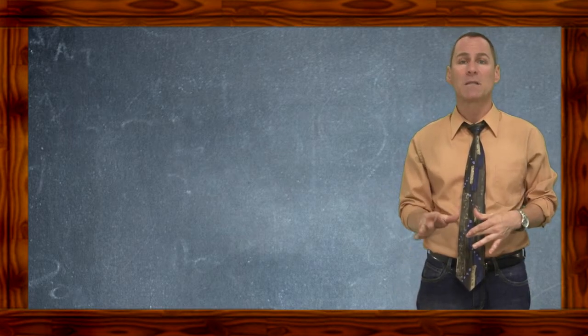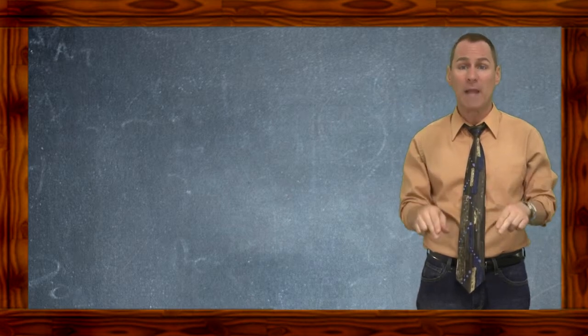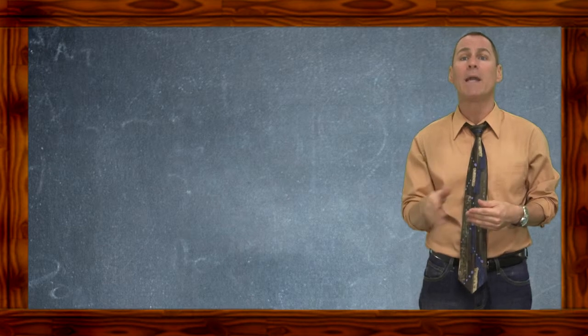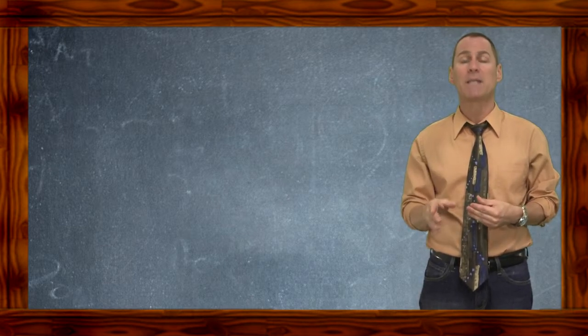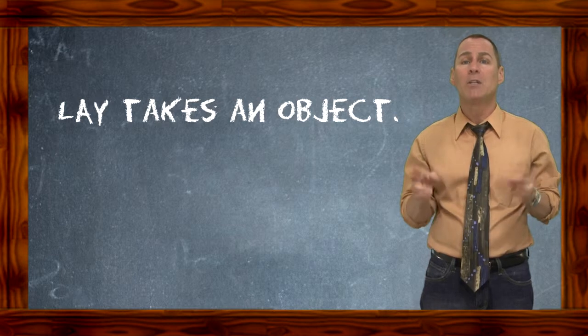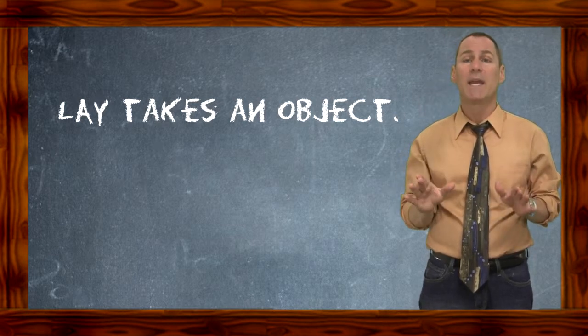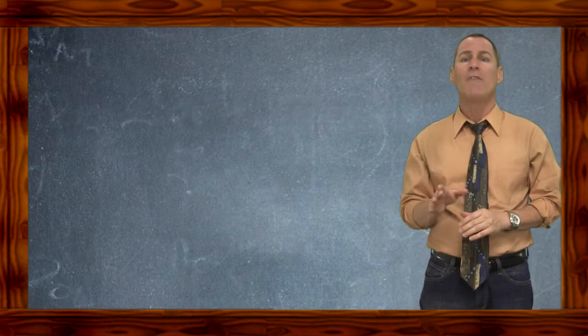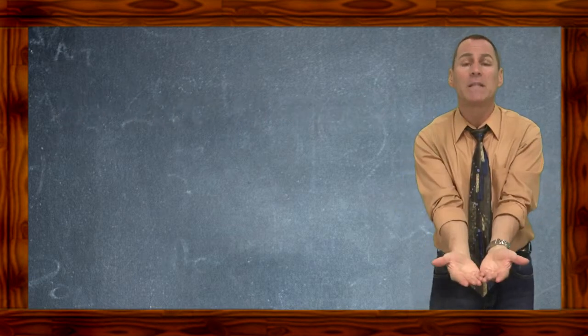In the present tense, meaning the action is happening right now, the easiest way to choose correctly between lay and lie is remembering that lay takes an object. Say that with me and get it into your head. Lay takes an object. In other words, you have to physically lay something down.